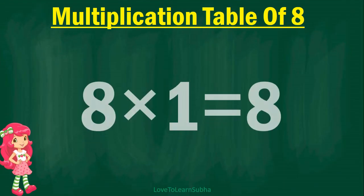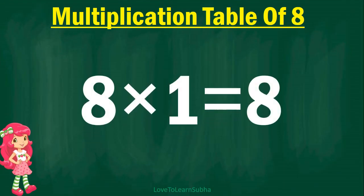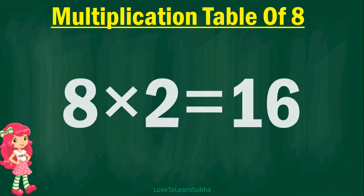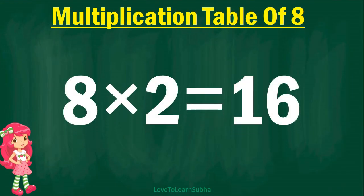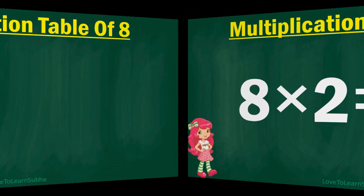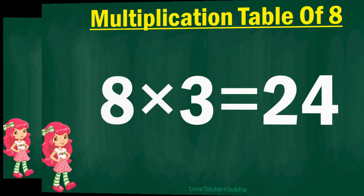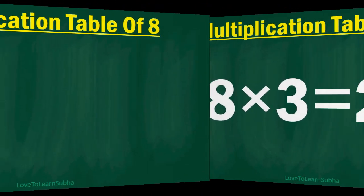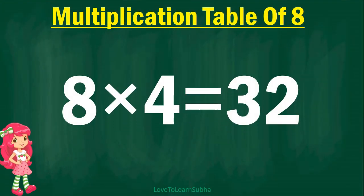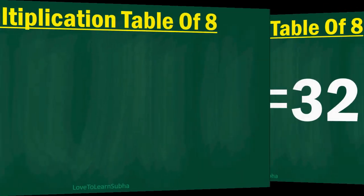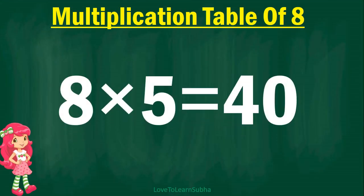8 1s are 8, 8 2s are 16, 8 3s are 24, 8 4s are 32, 8 5s are 40,